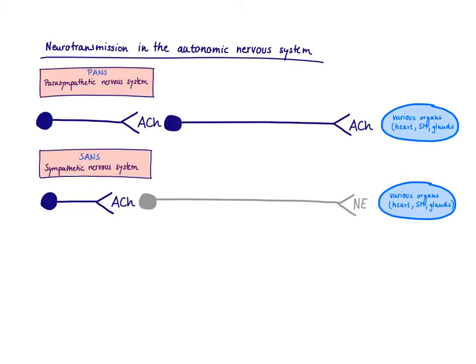All pre-ganglionic neurons use acetylcholine as the neurotransmitter — whatever comes out of the CNS releases acetylcholine. For the post-ganglionic neuron, it differs: parasympathetic post-ganglionic neurons also release acetylcholine, while sympathetic post-ganglionic neurons release norepinephrine most of the time.